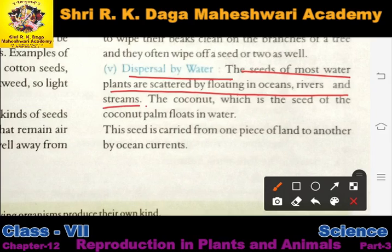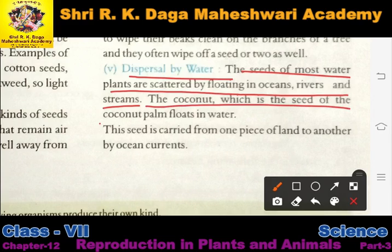Jadatar seeds ka jo dispersal hota hai — jo transfer hota hai — woh water ke through hota hai: ocean water mein, river water mein, stream water mein. Ye jo seeds hain woh flow karte hain aur ek jagah se dusri jagah par disperse ho jate hain. The coconut, which is the seed of the coconut palm, floats in water.